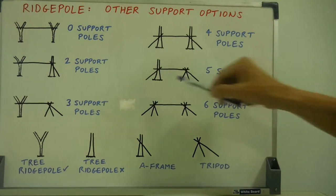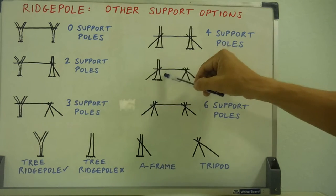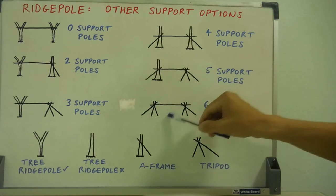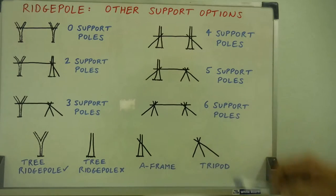Then maybe five support poles, an A-frame up against our tree that cannot support a ridge pole and a tripod. And then the two tripods with six support poles.